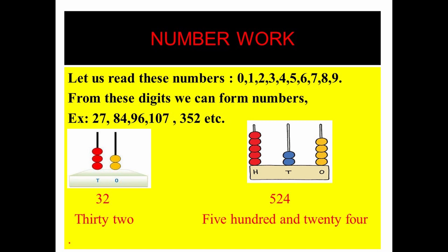On the abacus, I have shown you examples of two digit and three digit numbers. In the first example, there are 2 beads in the ones place and 3 beads in the tens place, so the number is 32. In the next example, ones place has 4 beads, tens place has 2 beads, and hundreds place has 5 beads, giving the number 524.